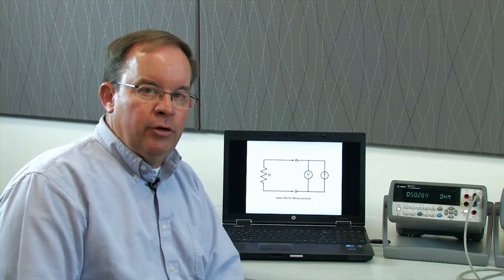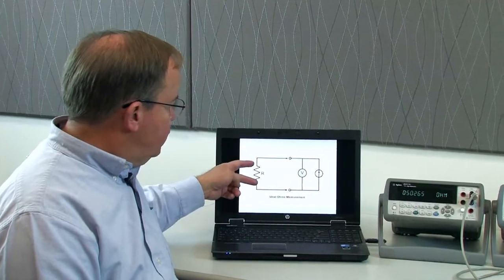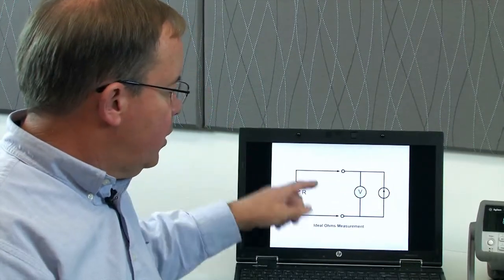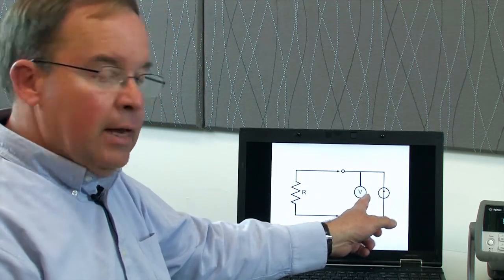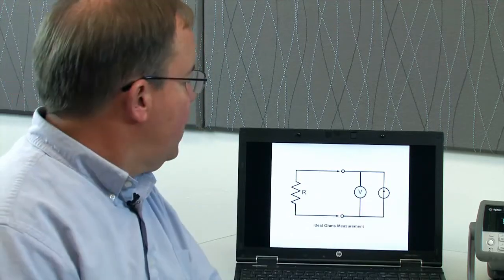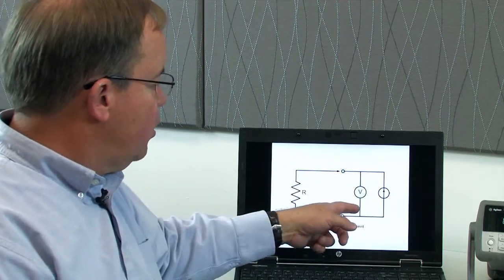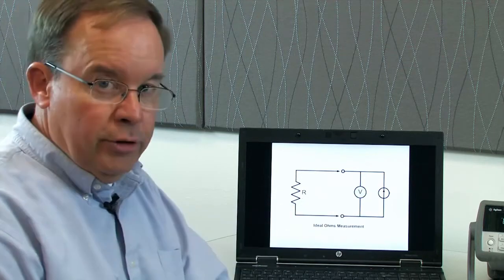When you're making an ohms measurement, you're measuring a resistance, such as in this ideal circuit. The resistor you're trying to measure is isolated from the rest of the circuit, and the digital multimeter has a current source and a voltage measuring device. When the current source applies a current to the circuit, a voltage is developed across the resistor and the voltage is measured, calculated ohms rather easily.